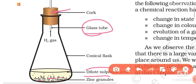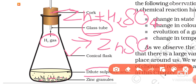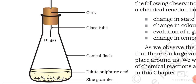These bubbles are of hydrogen gas. When you touch the flask, you will notice that the temperature has increased. Evolution of gas and increase in temperature indicate that a chemical reaction is taking place. The reaction is: zinc reacts with H₂SO₄ and gets converted into zinc sulfate, and hydrogen gas is evolved.